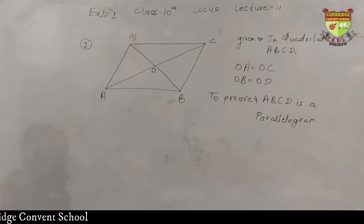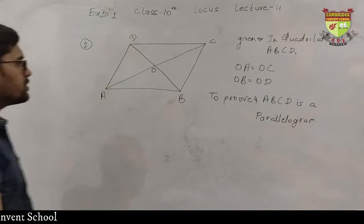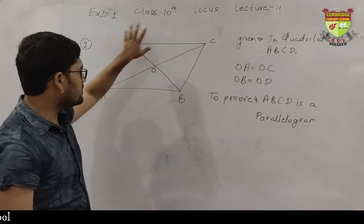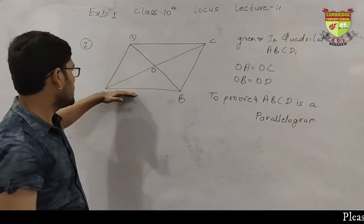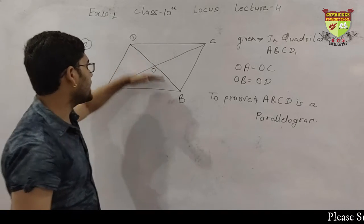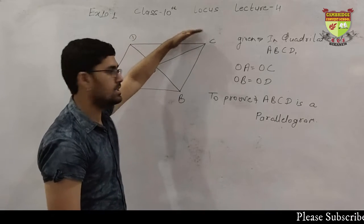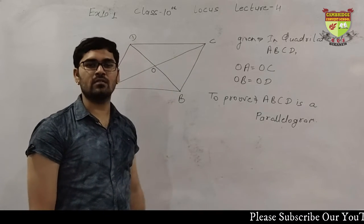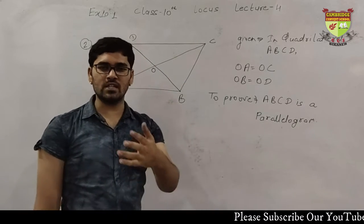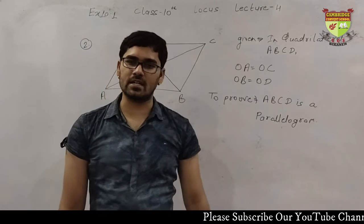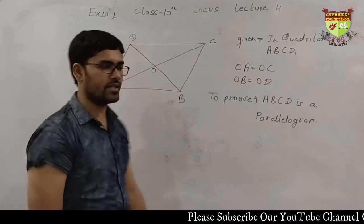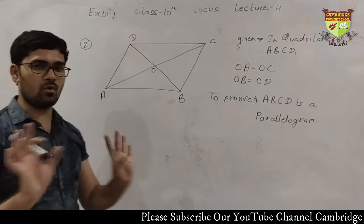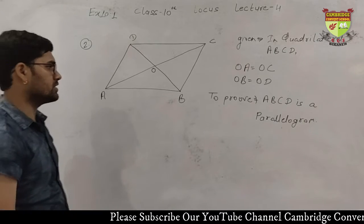How can we do this? In this figure of a parallelogram, this side and this side must be parallel, and this side and this side must be parallel, because in a parallelogram, opposite sides are parallel and equal. So we will proceed with that. So that was given, this is to prove, and now we are doing our proof.